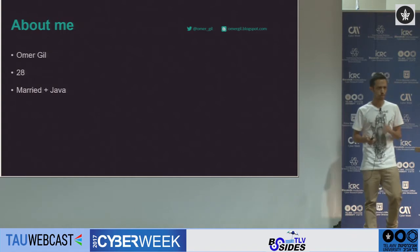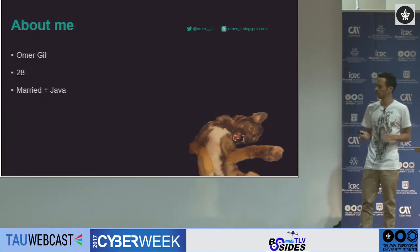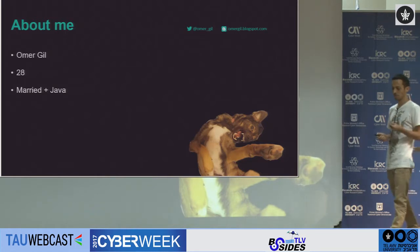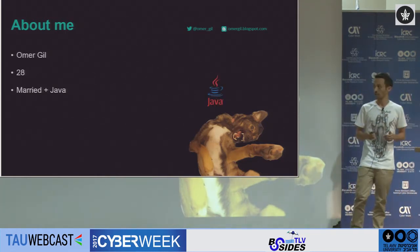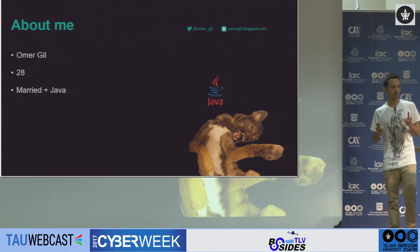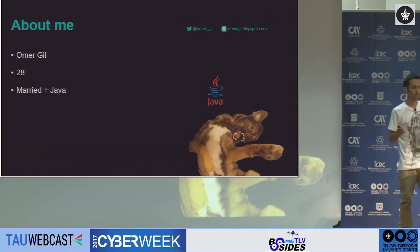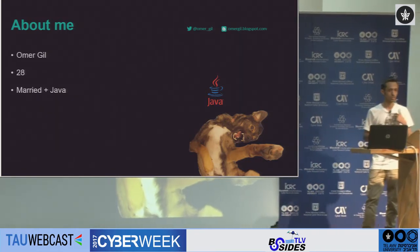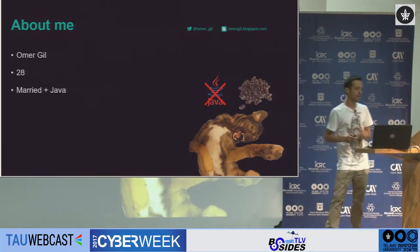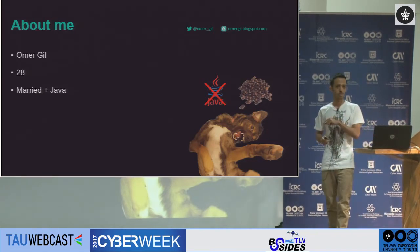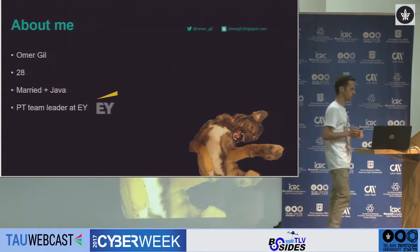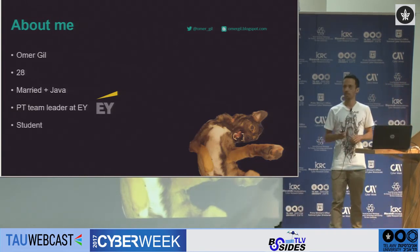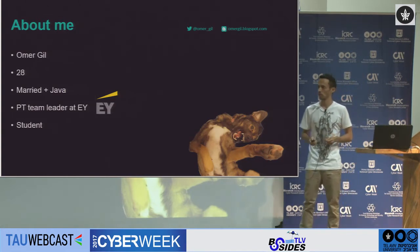So just before we begin, let me introduce myself. My name is Omer Gil. I'm 28 years old, and I'm married plus Java. Don't worry — you didn't miss a release of a new web framework, because this is Java. She is our awesome two-year-old dog, and you're probably thinking how geeky you need to be to call your dog after a programming language. Our dog is not named after the language, but after the coffee beans, of course. For a living, I'm a penetration testing team leader at EY, or Ernst & Young. We do penetration tests for web applications, infrastructure, mobile apps, and more. I'm also a student, just about to have my bachelor's degree in computer science.